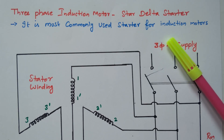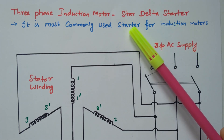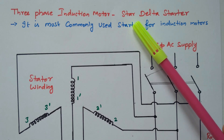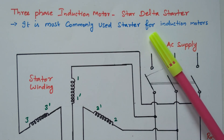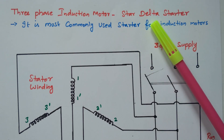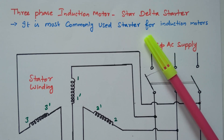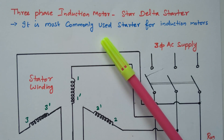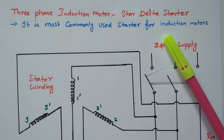Now we will go to the topic: star-delta starter. In order to start the motor, we are using one type of starter called the star-delta starter. The stator winding during starting is connected with the star connection. During running, it is connected with the delta connection. This method is most commonly used for induction motors.